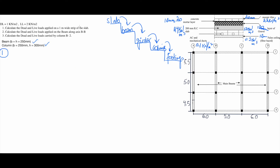Now we can start calculating the dead load and live load on a one-meter strip of slab. Starting with the dead load: 1 (given) plus concrete: 24 × 0.2, plus mortar: 20 × 0.01, plus AC duct lump sum: 0.1, plus tiles: 0.02 × 22, plus gravel: 17 × 0.12, plus full ceiling: 0.2 × 0.012. This gives the total dead load weight.